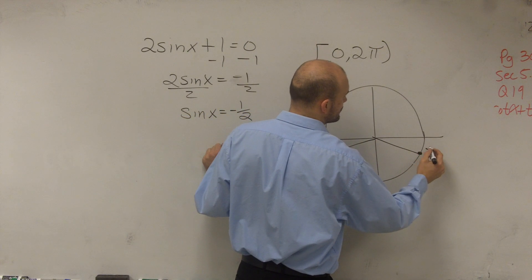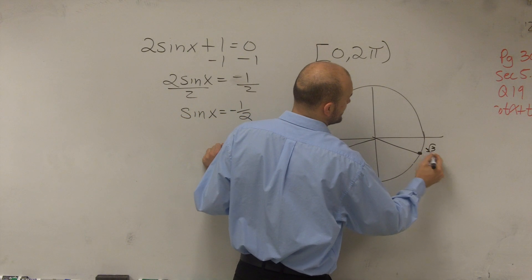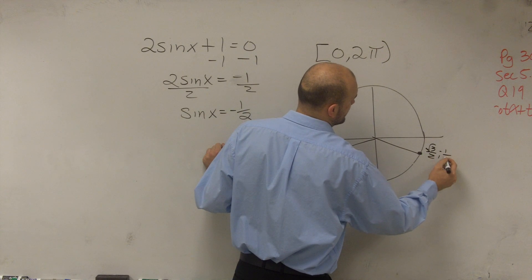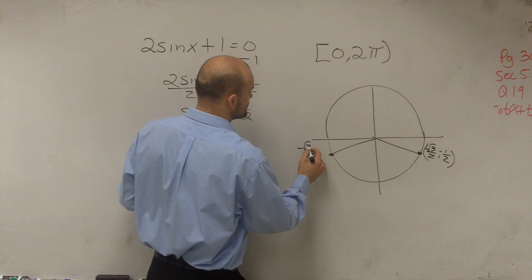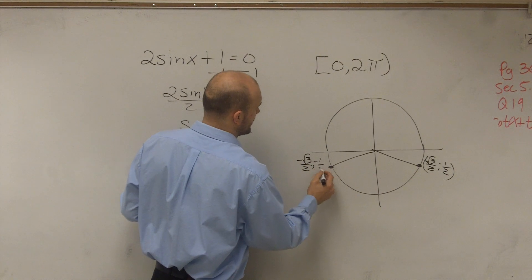First one is square root of 3 divided by 2 comma negative 1 half. And the other one is negative square root of 3 over 2 comma negative 1 half.